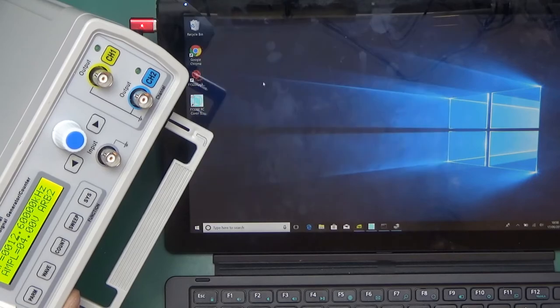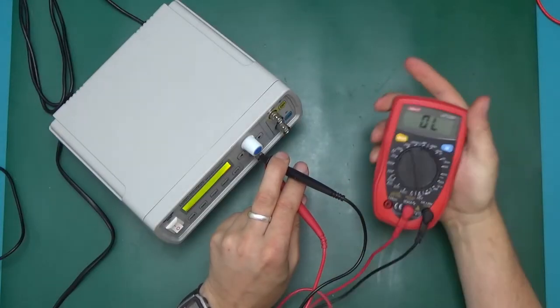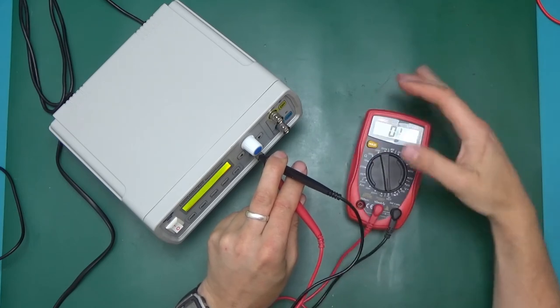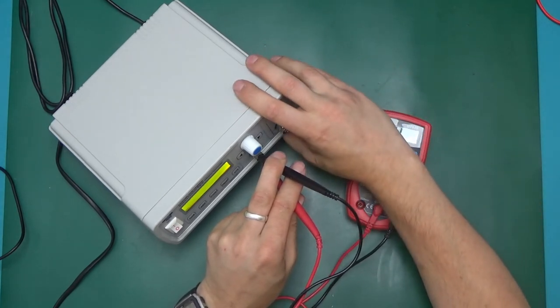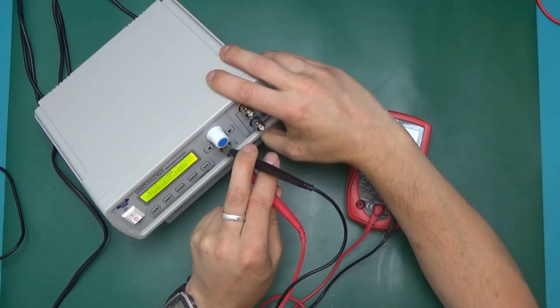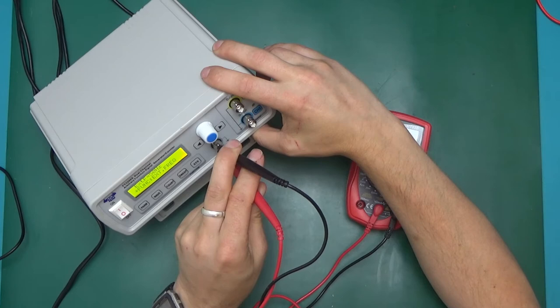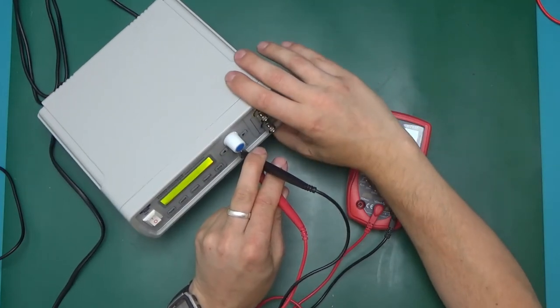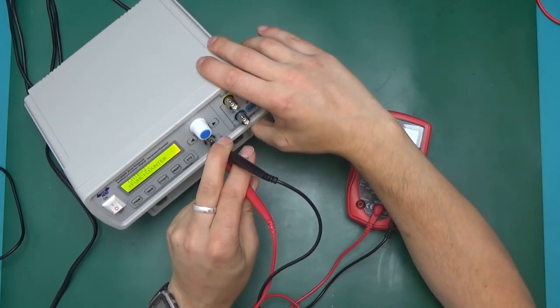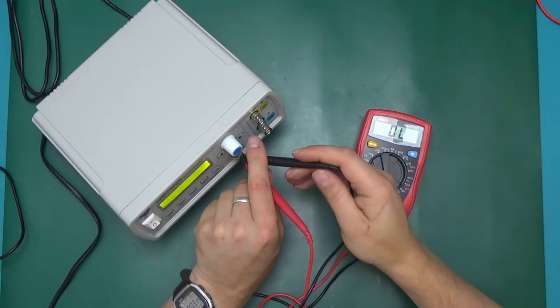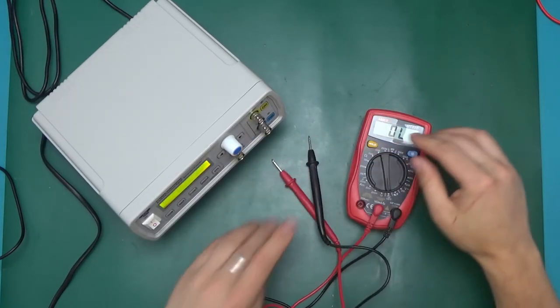So this little meter UNI-T UT33D has got an output of a square wave of approximately 50 hertz. It's not a very stable one but it's just for testing. As you can see, 49, 50 hertz. If we go to the counter, that's what the counter does. It just counts the impulses. I'm not sure what to do with the rest of the options here. I'm not going to pretend that I know what I'm doing with all those. I need to look at the instruction manual.